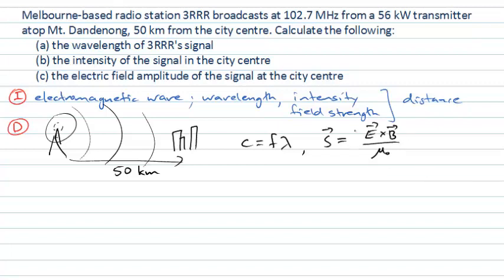Often what we're interested in is not the vector nature of the Poynting vector, but simply its amplitude. Because E and B are at right angles to each other for a wave propagating in free space, this cross product can simply be written as E times B, since the 90-degree angle means we just need the amplitudes. There's also an important relationship that the electric field amplitude relates to the magnetic field amplitude simply by the speed of light.